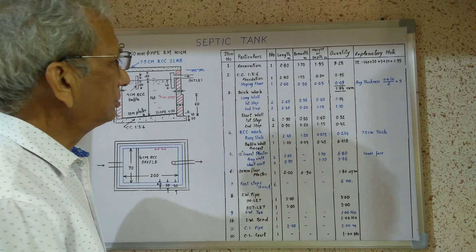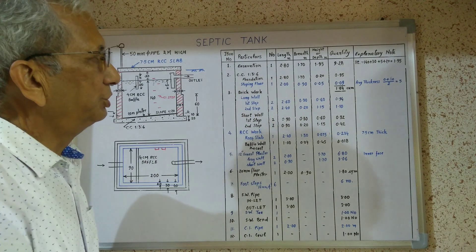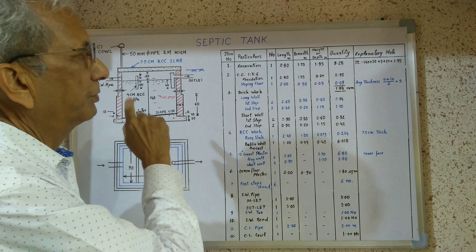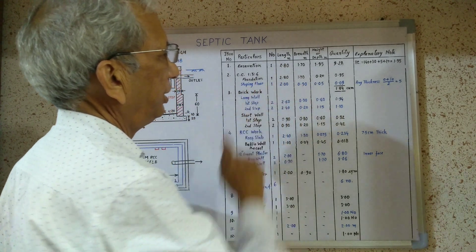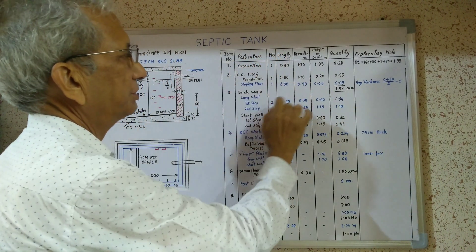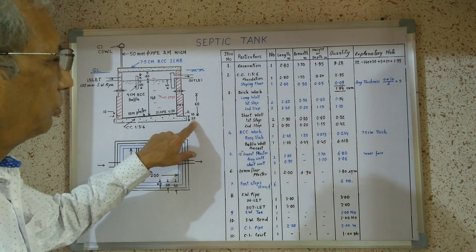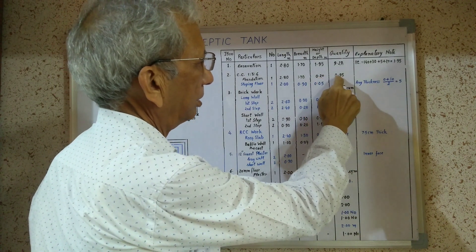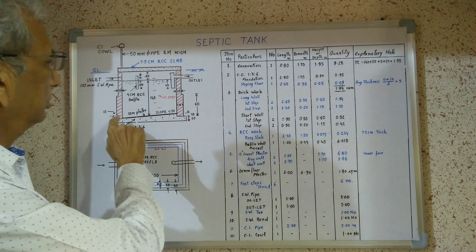The second item is plain cement concrete in the foundation — CC 1:3:6. The length will be the same as in the case of excavation, that is 2.80 meters. Width will also be the same as excavation, that is 1.70 meters. Thickness will be 20 centimeters, giving a result of 0.95 cubic meters.